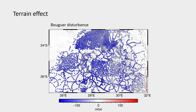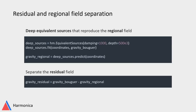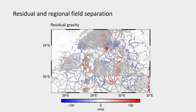The Bouguer disturbance has a lot of negative values because it is highly affected by very deep sources around the Moho. The next step is to separate the regional from the residual field. One way to tackle this is to define very deep equivalent sources — point sources beneath the observation points. These deep sources reproduce only the smooth, long-wavelength regional field. Once we have the regional field, we can remove it from the Bouguer disturbance to get the residual gravity.